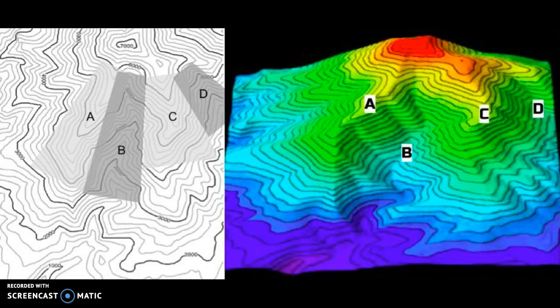Ridges are the higher portions of the hillside. They typically form because there is more resistance to the flow of water and tend to undergo less erosion than the valleys. In this map, regions A and C represent the ridges.